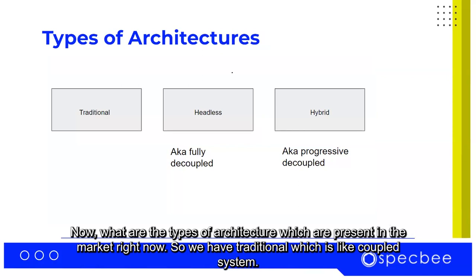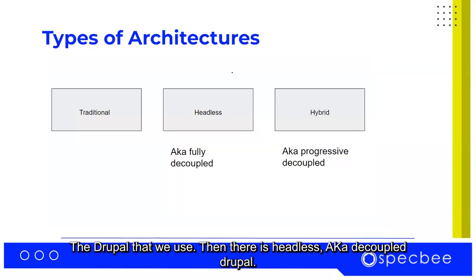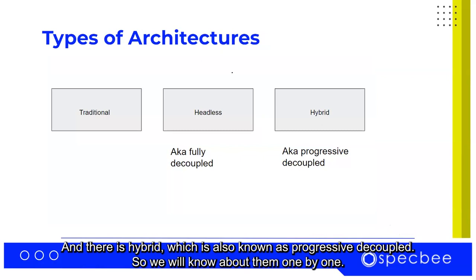What are the types of architecture present in the market right now? We have traditional, which is the coupled system — the Drupal that we use. Then there is headless, also known as decoupled Drupal. And there is hybrid, which is also known as progressive decoupled. We will go through them one by one.